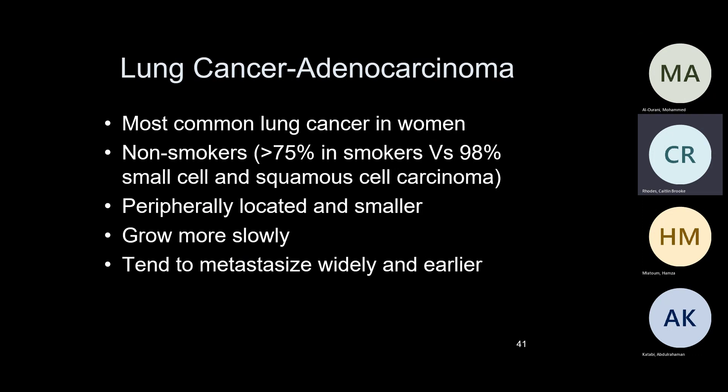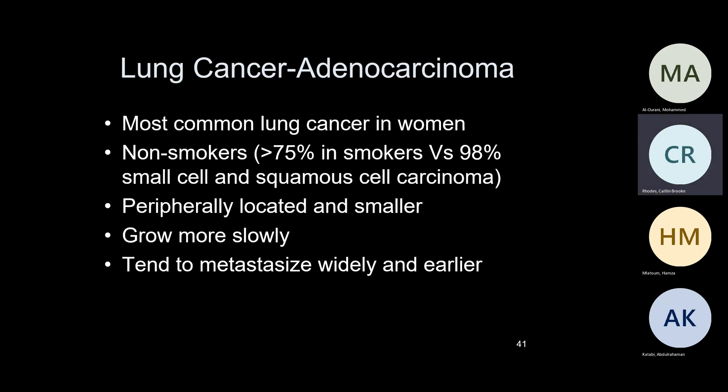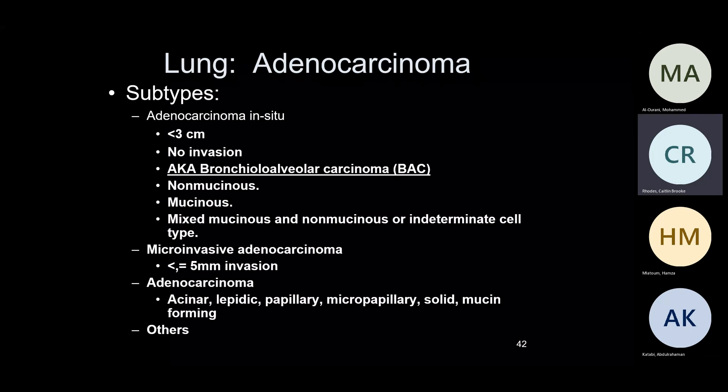Adenocarcinomas can be peripherally located and can be smaller. I've seen cases of patients followed with a 1 cm nodule that grew to 1.2 cm the next year, then biopsy showed adenocarcinoma — that's a typical finding. Know your subtypes of adenocarcinomas. Adenocarcinoma in situ — the definition you need to know for board questions: it has to be less than 3 centimeters in size and is a non-invasive carcinoma.